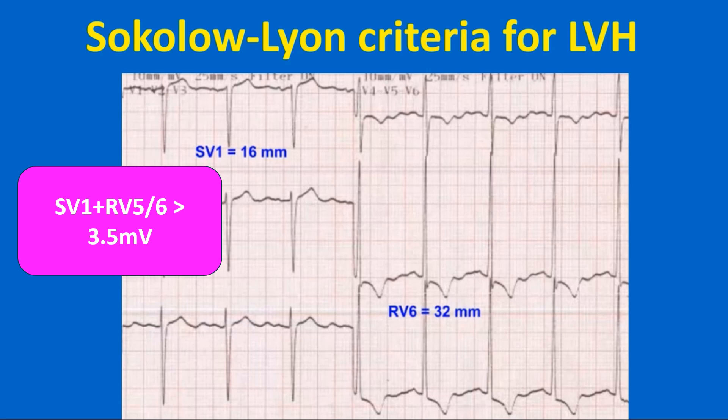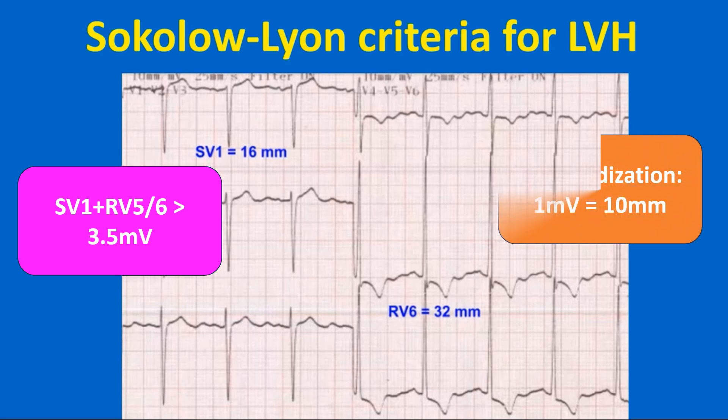The Sokolov-Lyon criteria are based on tall R waves noted in leads facing the left ventricular hypertrophy. These values correspond to 35 mm and 26 mm respectively, with the usual standardization of 10 mm per mV.